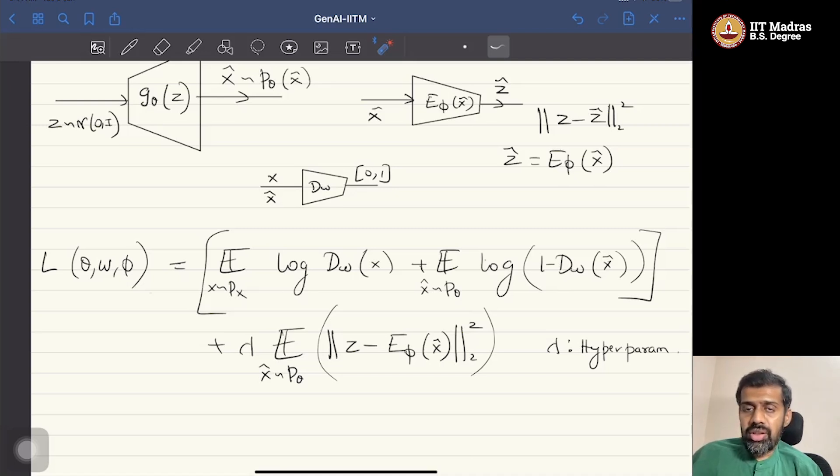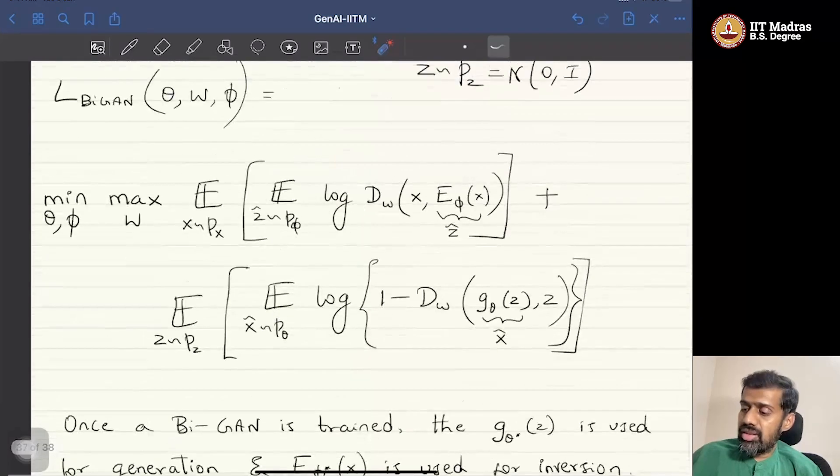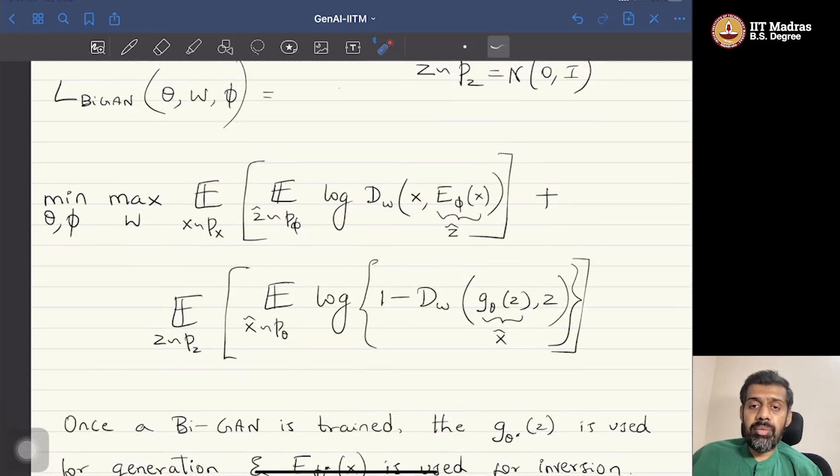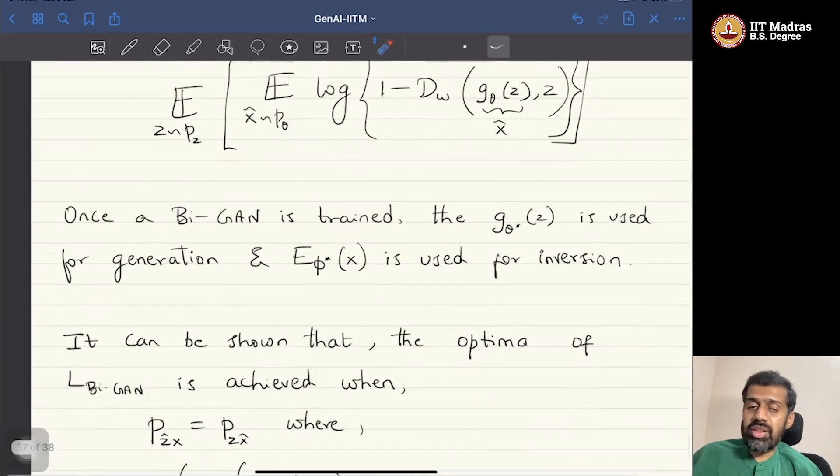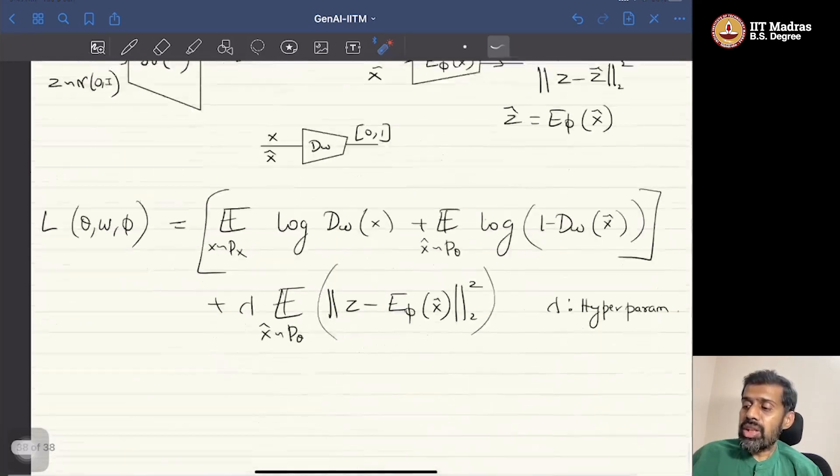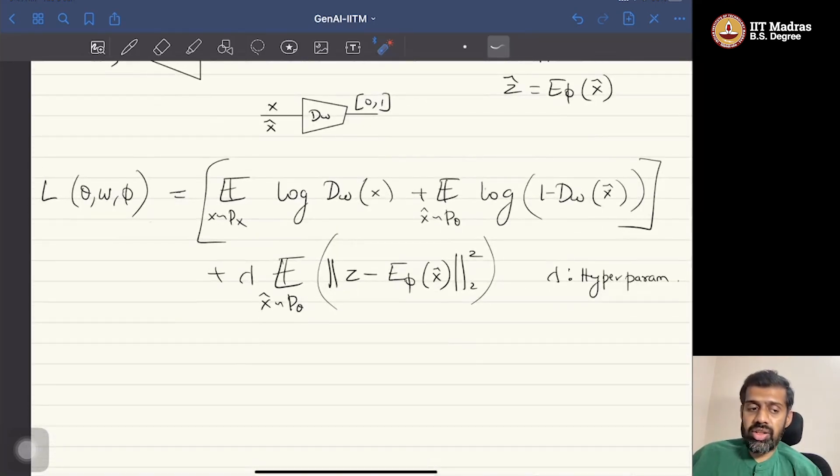However, it has been found out that modifying the discriminator and solving for the joint distribution yields better inversion quality compared to that of simple or naive regression. So these are two techniques that are generally used for GAN inversion. There have been many other techniques proposed in the literature, but in the interest of time I would just stop here and move on to the next application of adversarial learning.